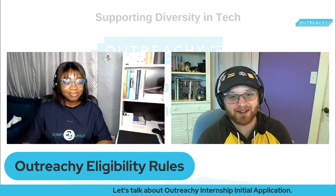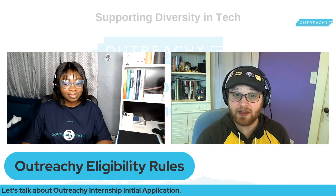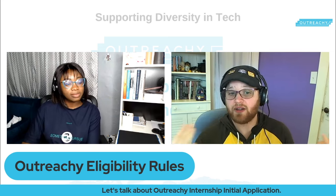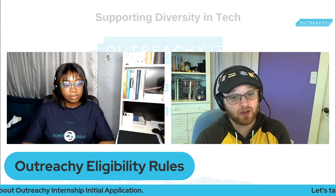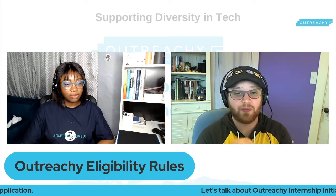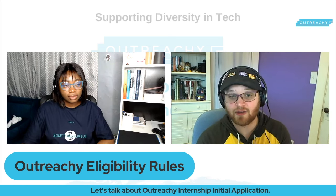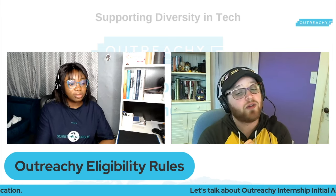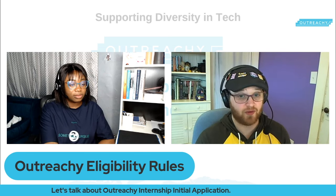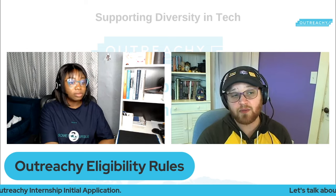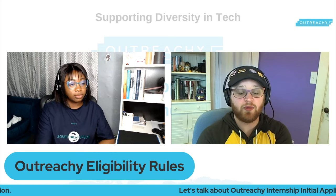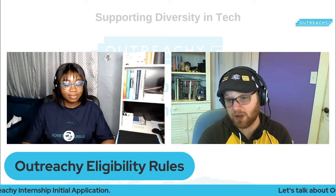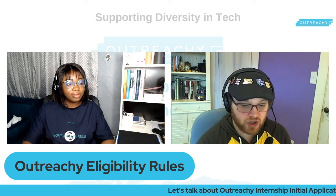I'm going to leave it to Sage now to continue with the Outreachy eligibility rules. So, as Omatola mentioned, there are two stages of the Outreachy application: an initial application that includes essay questions, and then a contribution stage where you look through projects, pick one, and make contributions — work on project tasks. The initial application helps us understand whether you're eligible for Outreachy, so let me go through the eligibility rules.